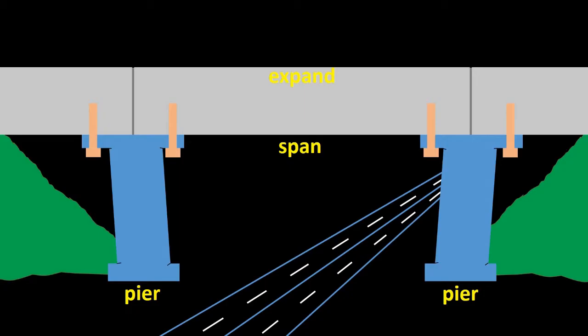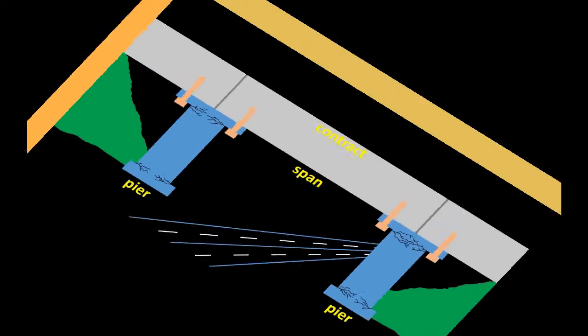If the central span was bolted into the piers, the piers would be pushed outwards and pulled inwards as the span expanded and contracted, and cracks would form on the piers.